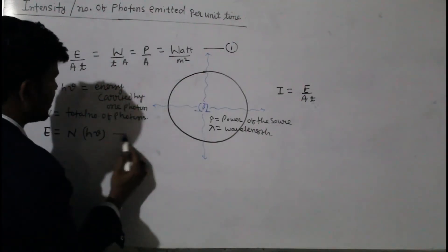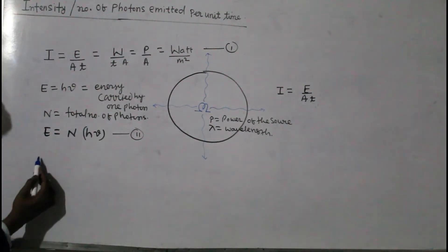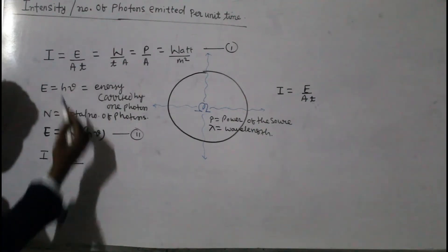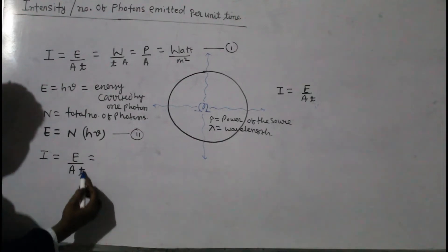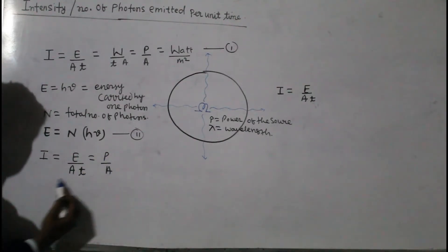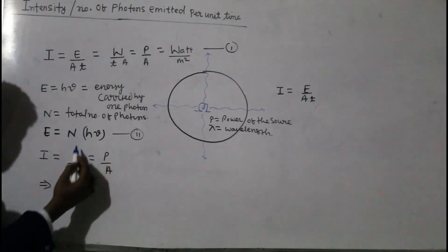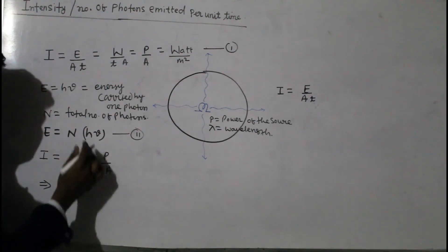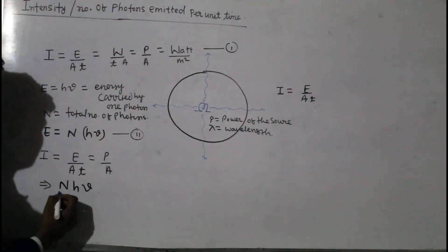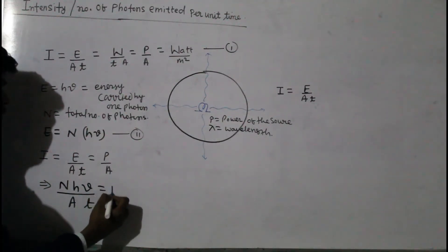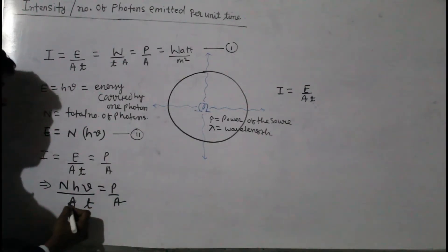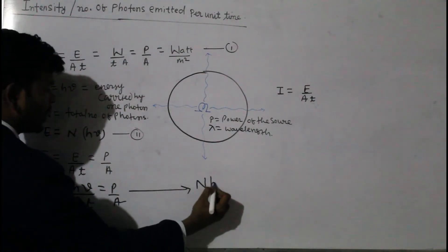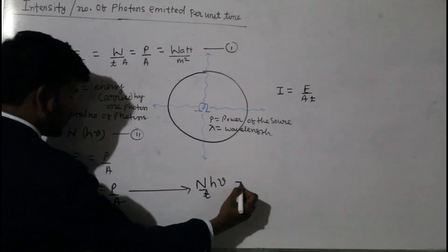We can take the intensity equation as equation 1 and the total energy equation as equation 2. Replacing the value of energy: intensity I equals N·H·nu divided by A divided by T, which also equals P divided by A. The A cancels out, so we get N·H·nu divided by T equals P, where H is Planck's constant and nu is the frequency.